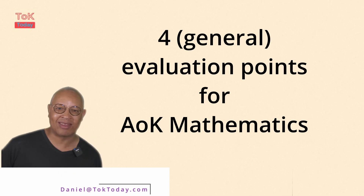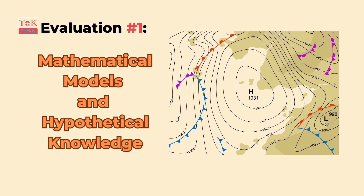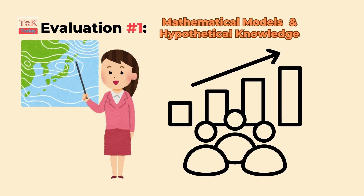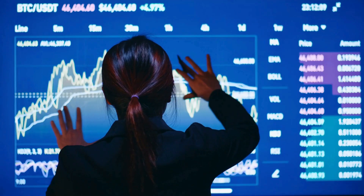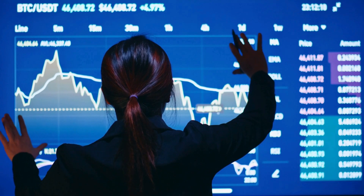Let's get started. Evaluation point one: mathematical models and hypothetical knowledge. Mathematical models allow us to develop hypothetical knowledge. These models are very powerful tools for predicting and forecasting future events. For example, meteorologists use mathematical models to predict weather patterns, and economists rely on them to forecast market trends.